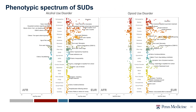We also ran PheWAS analyses across the phenotypic spectrum for alcohol use disorder and opioid use disorder in both African and European samples. Higher genetic risk for alcohol use disorder is associated with years of education, ever using opiates, tobacco dependence, and symptoms such as seeking treatment for panic disorder. Genetic liability for opioid use disorder is associated with other substance use disorders, symptoms of psychiatric disorders, and even an association with unsuccessful efforts to decrease gambling.